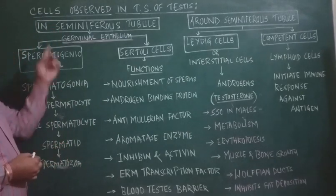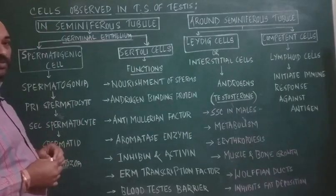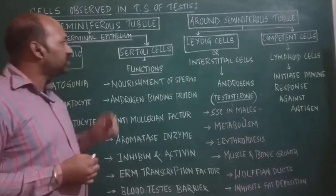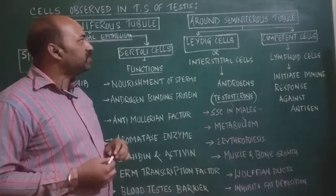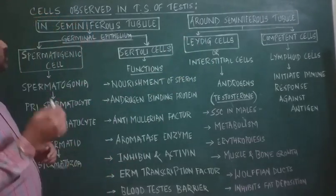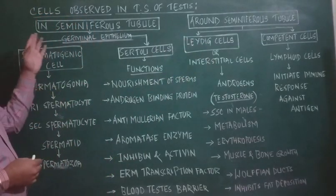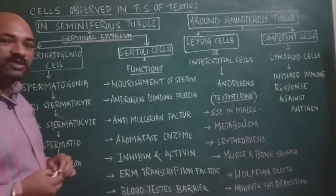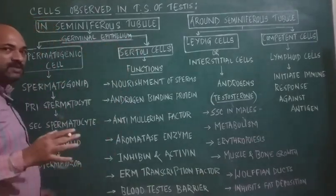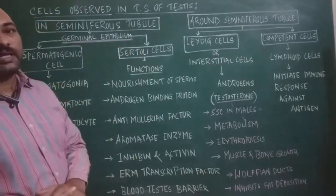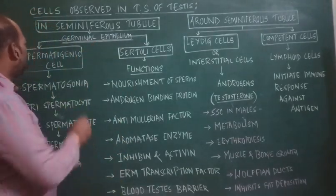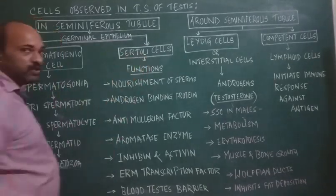The cells present inside the seminiferous tubule are the spermatogenic cell and the Sertoli cell. The cells present outside the seminiferous tubule are Leydig cells and immunologically competent cells. Inside the seminiferous tubule, the entire tubule is lined by a germinal epithelium made up of mainly two types of cells: spermatogenic cells and Sertoli cells.